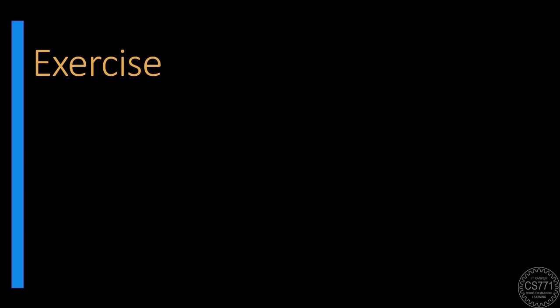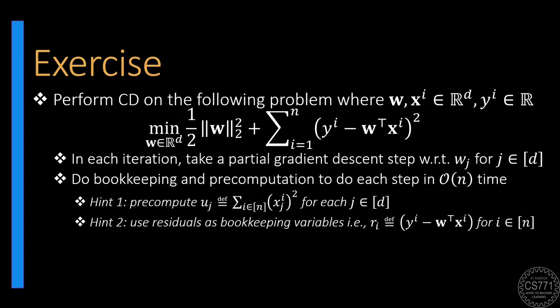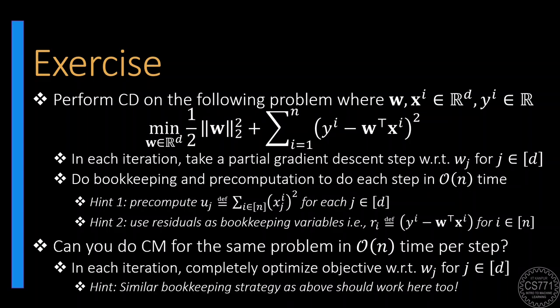To get some more practice on designing solvers, design a coordinate descent solver for the primal form of the ridge regression problem. Use bookkeeping and pre-computations to ensure that each descent step takes no more than order n time and modify the algorithm to a coordinate minimization algorithm where instead of taking just a descent step, we completely optimize the objective with respect to the chosen coordinate of the model w. Ensure that each coordinate minimization step takes no more than order n time.